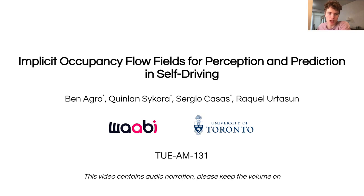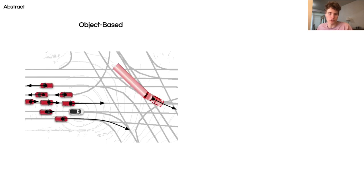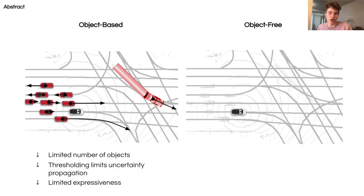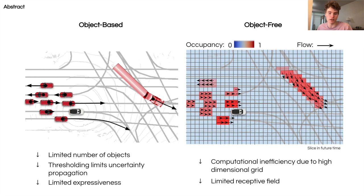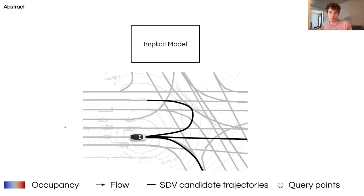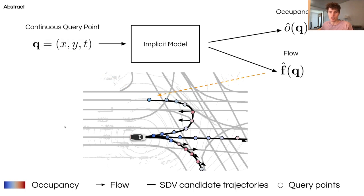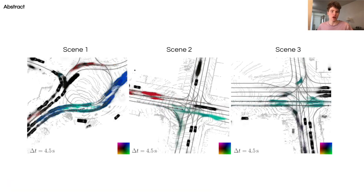I'm Ben Agro, and today I'll be presenting Implicit Occupancy Flow Fields for Perception and Prediction in Self-Driving. Traditional object-based autonomy detects discrete objects by thresholding confidence scores. This can be unsafe because we need to limit the number of detections for efficiency, and thresholding reduces uncertainty propagation. Alternatively, object-free methods output dense occupancy and flow grids for the whole scene over future time. These methods are computationally inefficient due to high-dimensional grids, and inaccurate due to the limited receptive field inherent to fully convolutional networks. This motivates Implicito, a unified perception and prediction approach which employs an efficient global attention mechanism to implicitly represent occupancy and flow over time with a single neural network. Implicito avoids unnecessary computation as it can be directly queried by a motion planner at a continuous point in space and future time. Through extensive experimentation in urban and highway settings, we demonstrate Implicito outperforms the current state-of-the-art.